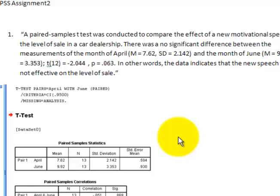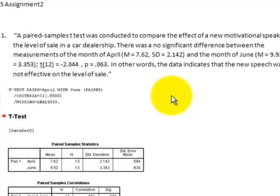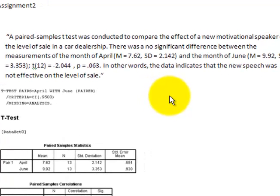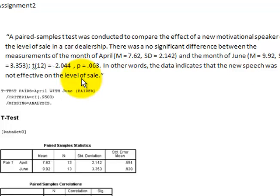Here's the final example about the paired t-test. You got the data right. The p-value was greater than 0.05. You might have worded it better — here's a suggestion: the data indicated that the motivational speaker was not effective in increasing the number of car sales, something like that.